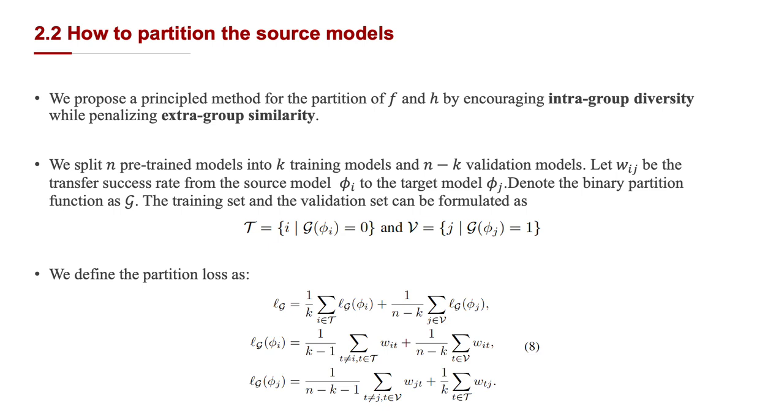Minimizing the first formula of equation 8 encourages intra-group diversity. To make the decision boundary of the ensemble model more general and effective, we minimize the transfer success rate between any two pre-trained models inside this group. Minimizing the second formula of equation 8 is penalizing extra-group similarity.